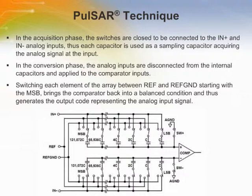Successive approximation register analog-to-digital converters use various new techniques for improved resolution. The PULSAR family of ADCs uses internal switched capacitor techniques to extend the resolution of successive approximation ADCs to 18 bits. The schematic illustrates a simplified input stage of a PULSAR ADC. The SAR algorithm takes two phases to determine the ADC output code. The first phase is the acquisition phase, where SW plus and SW minus are initially closed, and all switches are connected to the IN plus and IN minus analog inputs. Each capacitor is used as a sampling capacitor, acquiring the analog signal at the input.